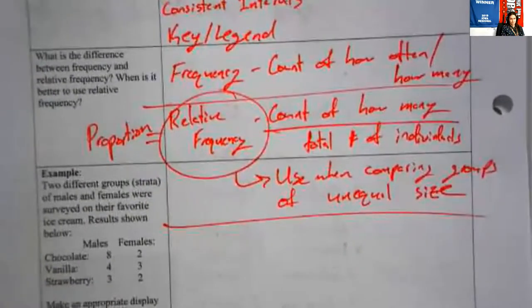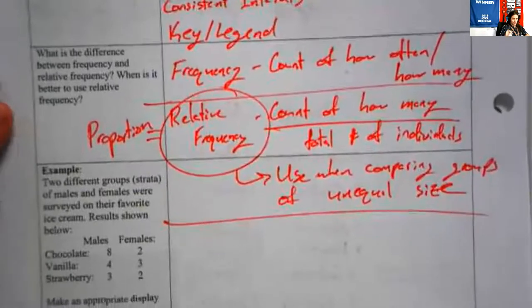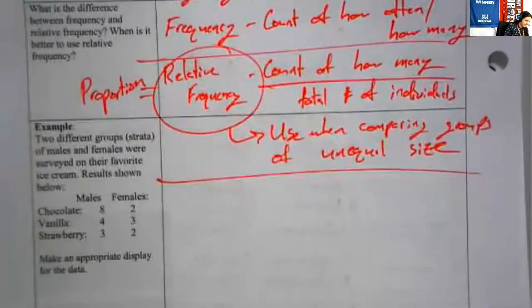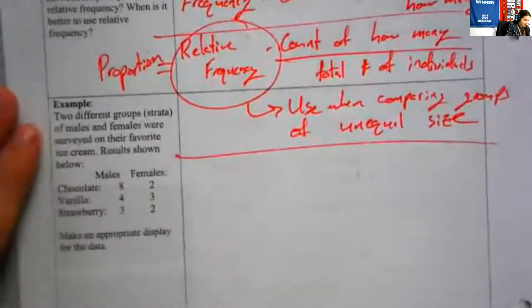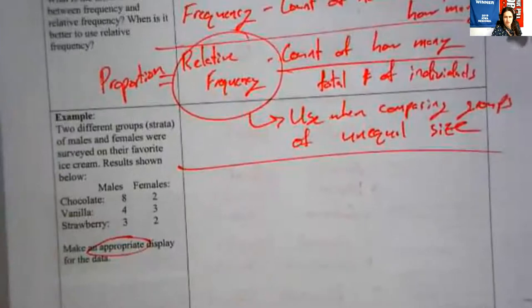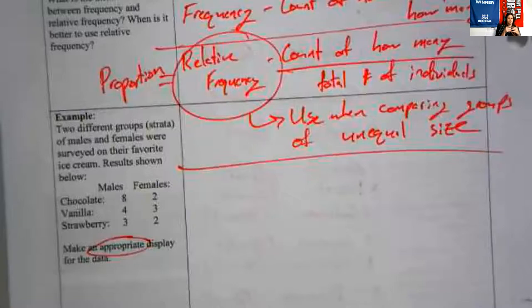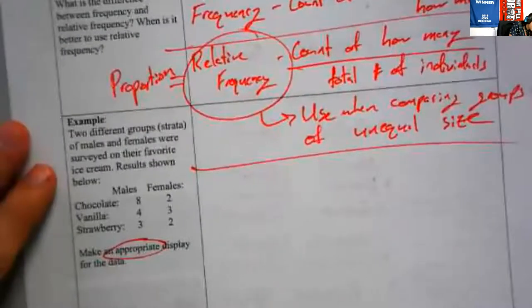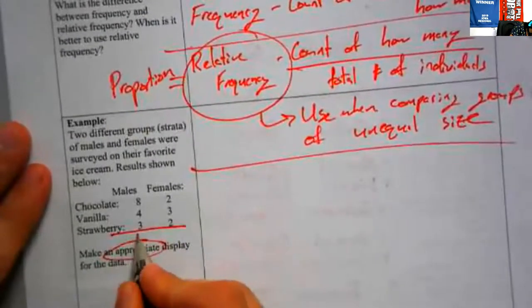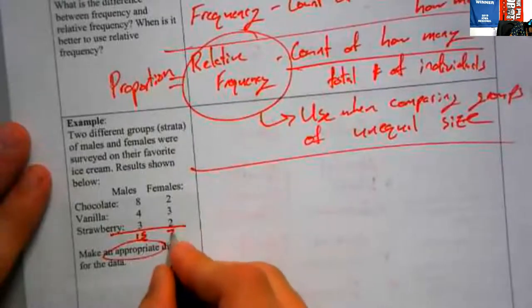And the next example gives us a pretty obvious case where this relative frequency would be useful. Two different groups of males and females were surveyed on their favorite ice cream. Results are shown below. Make an appropriate display of the data. So an appropriate display. Consider what that means for a second. Take a look at these. How many males did we survey here? We surveyed 15 males. How many females we surveyed? We surveyed seven.